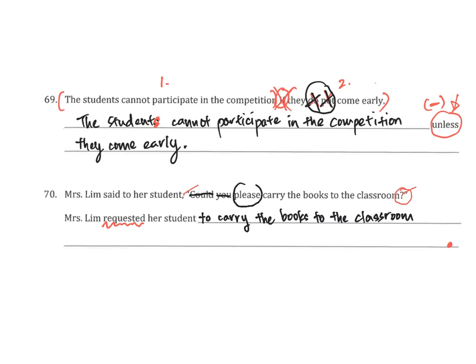Now, what happened to 'please'? It's cancelled. Why? Because the word 'please' has been swallowed up in the word 'requested'. When you request, you're actually saying please. So 'please' is cancelled because 'requested' has now taken its place. If you count: cancel 'could' — one; cancel 'you' — two; cancel 'please' — three; cancel the question mark and change it into a full stop — four. So there are four transformations altogether. Whenever we have reported speech, there are always multiple points of transformation. In this case it's quite easy — you just need to cancel, cancel, cancel, and cancel, and change it to a full stop.